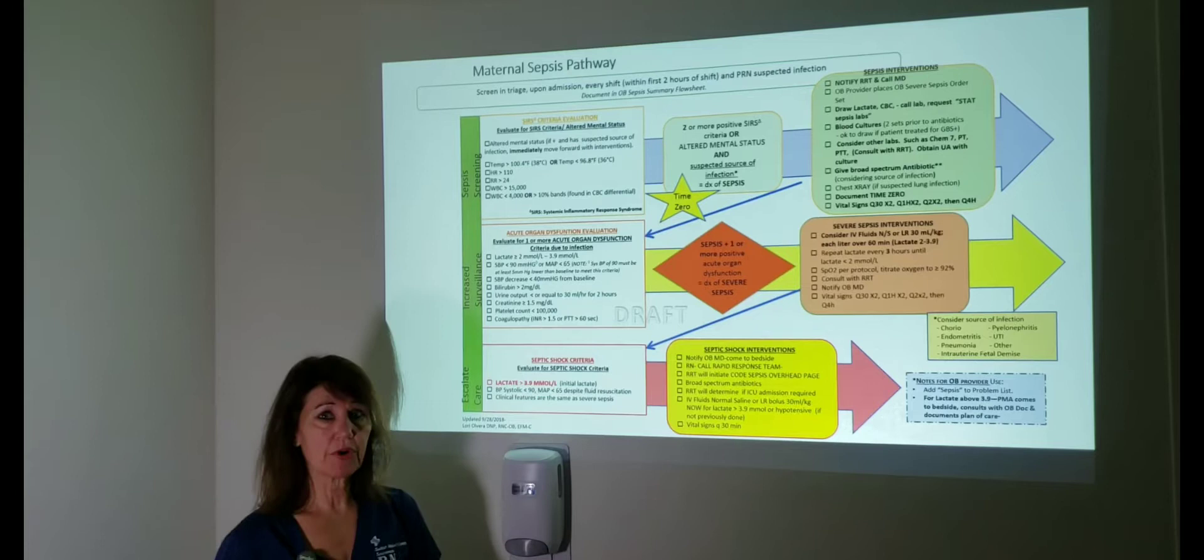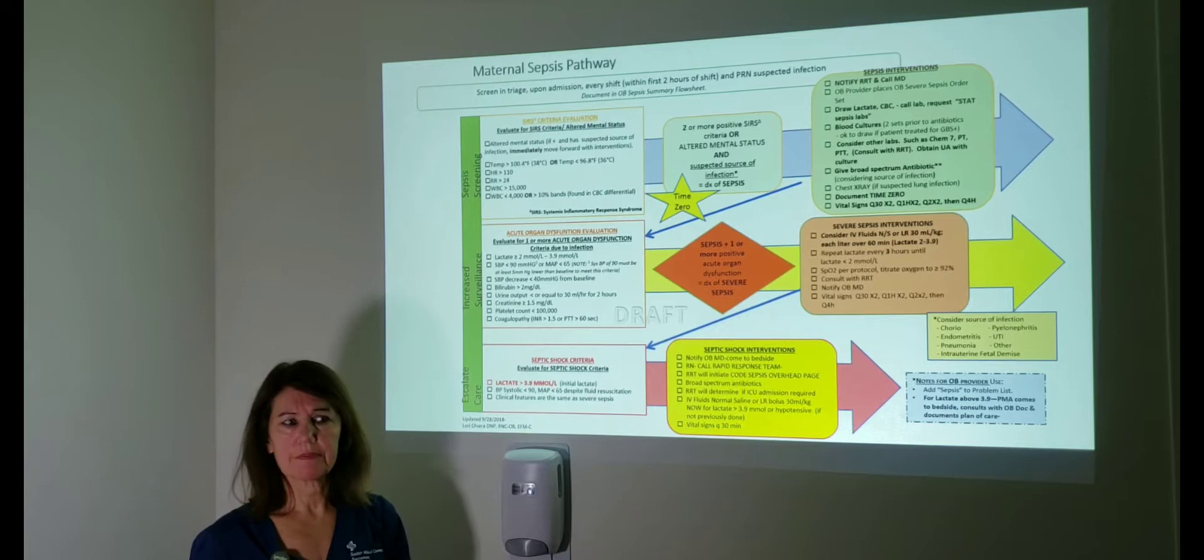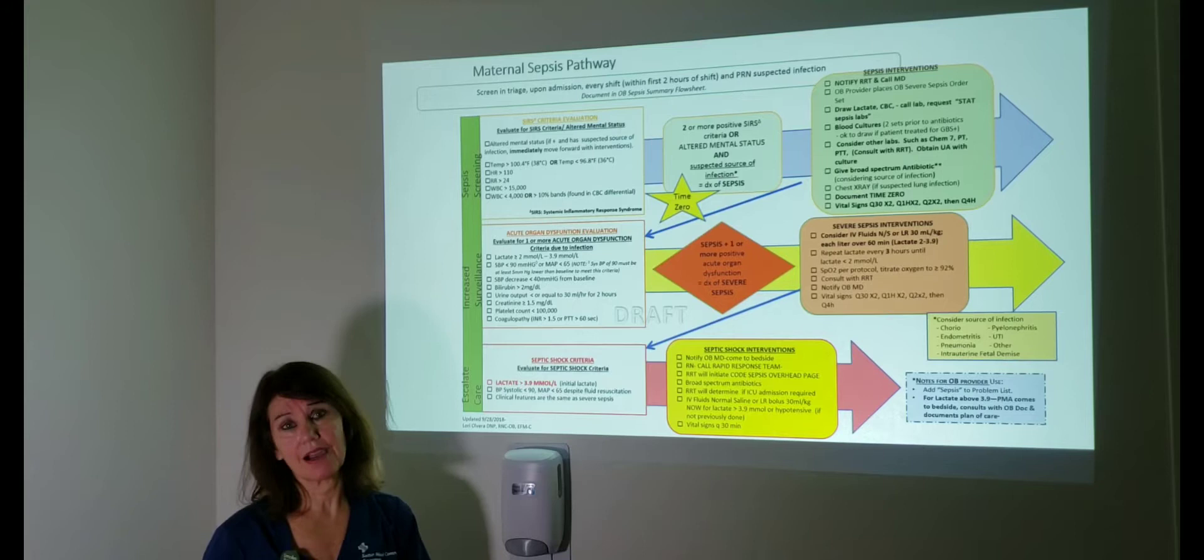Then we're going to consider what the source of infection is. And by that, you know, usually in labor, the source of infection is choreo. If it's in postpartum, it's endometritis, and in antepartum depending upon their symptoms, it could be pyelonephritis, a urinary tract infection. Those are like our hallmark things that can be our source, but we're going to want to start antibiotics depending upon the source of infection.